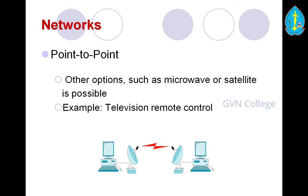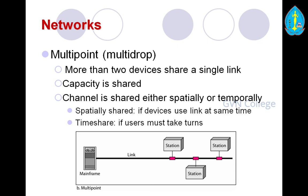An example of point-to-point is a television remote control system. Multipoint communication, also called multidrop, has more than two devices sharing a link — the capacity is shared. The channel is shared either spatially or temporally: spatially shared if devices use the link at the same time, or time-shared if users must take turns — called a time-sharing system. An example shows a mainframe computer connected to three stations sharing the link.